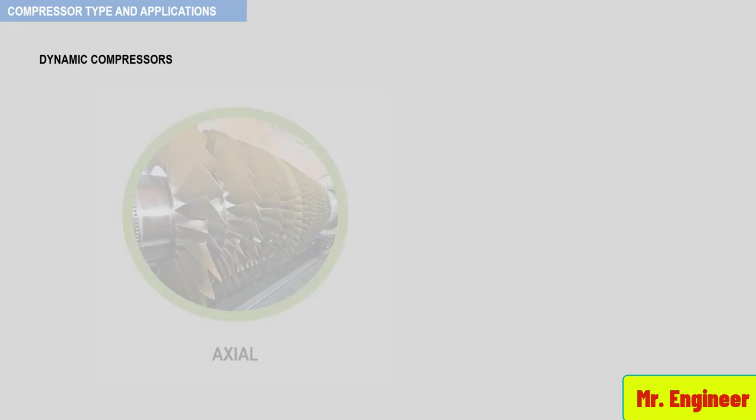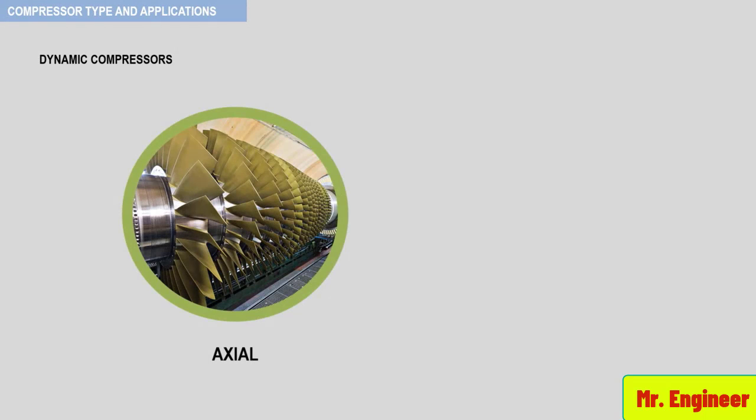Axial flow compressors are primarily used in gas turbines. They also find use in blast furnace blowers in steel industries and similar requirements of large air or gas volumes.